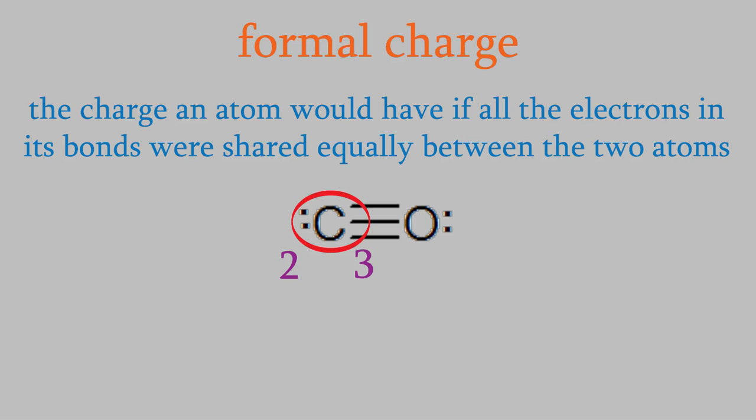So the carbon has a total of five electrons. To get the formal charge, we subtract that number from the number of valence electrons the carbon has. Carbon has four valence electrons, so the formal charge is four minus five, which gives us negative one.